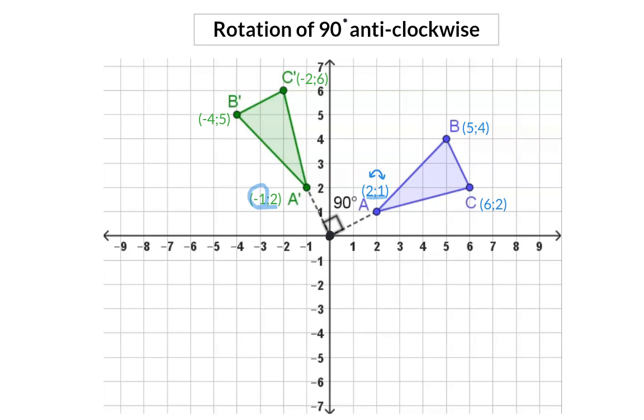The same happened with B. B was (5,4) which swapped around to become (4,5) and the new x of 4 changed sign to minus 4. So for a rotation of 90 degrees anticlockwise, firstly the x and y coordinates swap around and then the new x changes sign.